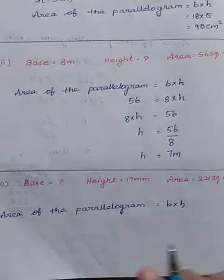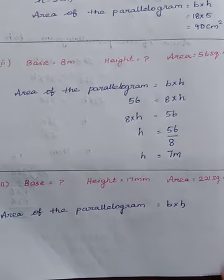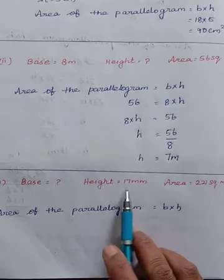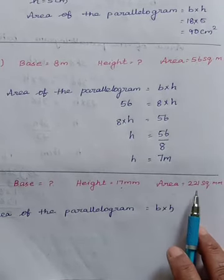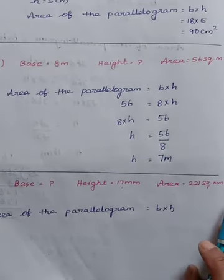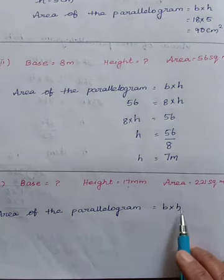Next is roman letter 3. Base value, we do not know the value. And the height value is 17 mm. And the area is given 221 square mm. So area of a parallelogram is base into height.